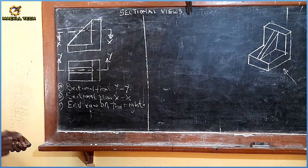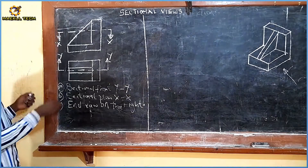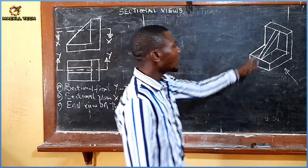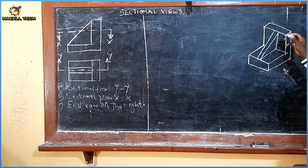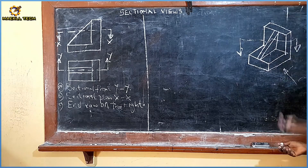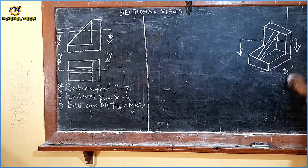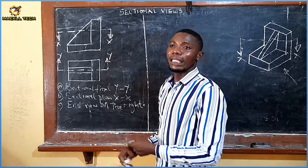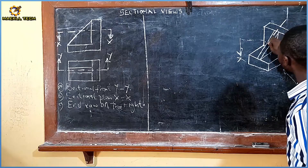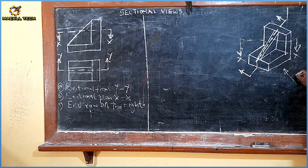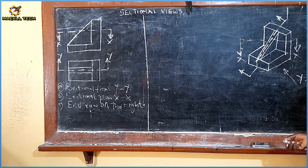Remember, if you watched part 1 of this video, I said our object is sectioned on the elevation facing downward, and what they are asking for is a sectional plan. If somebody picks a knife and slices this object throughout facing downward, what are you seeing? You are seeing the plan of that object, because the plan is what you're seeing from the top - that's the sectional plan XX. While if the object is sliced from the plan facing this way or this way, we will be seeing the elevation - and that's what is happening here for sectional front YY.